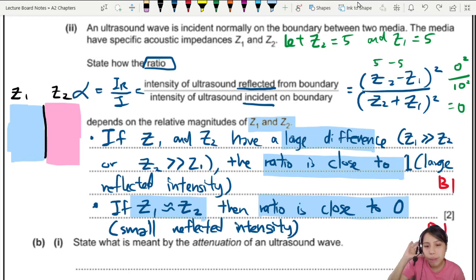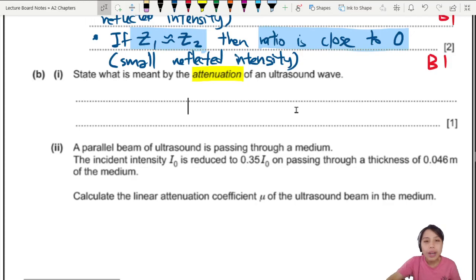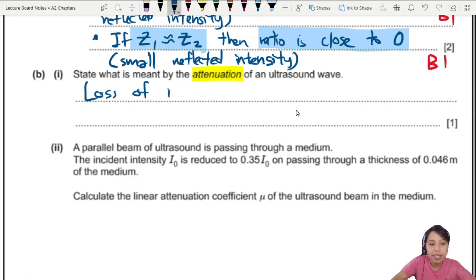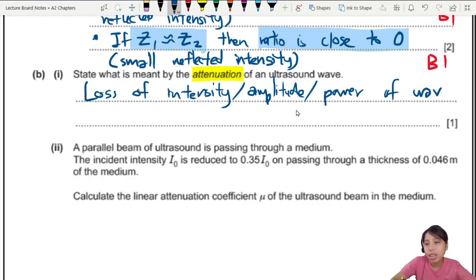State what is meant by attenuation of an ultrasound wave. We're going to this now. What is attenuation? Energy loss. Damping. But the proper way you want to say is the loss of intensity. Or you could say amplitude. Or you can say power of any wave or just ultrasound wave. One mark.